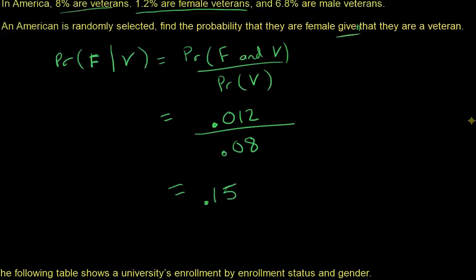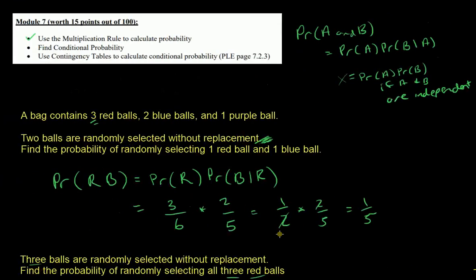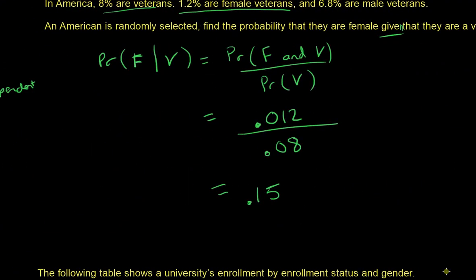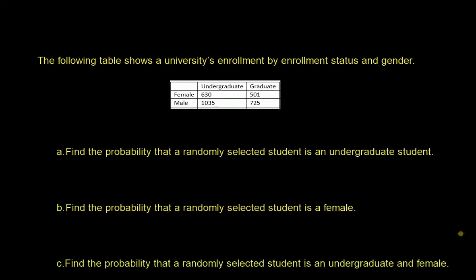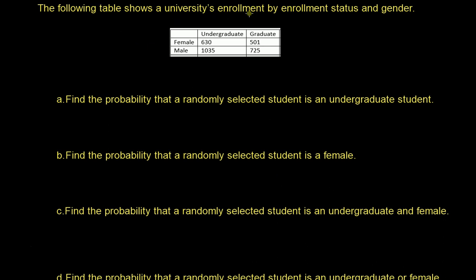Now let's do a contingency table problem. The table shows university enrollment status and gender. We have 630 female undergraduates and 1035 male undergraduates — totaling 1665 undergraduates. Then 501 female graduates and 725 male graduates — totaling 1226 graduates.